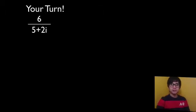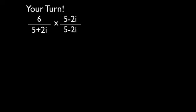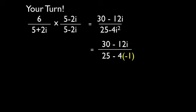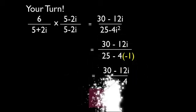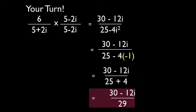Now, if your answer is correct, multiply the numerator and the denominator by the conjugate of the denominator and we'll have 30 minus 12i all over 29.